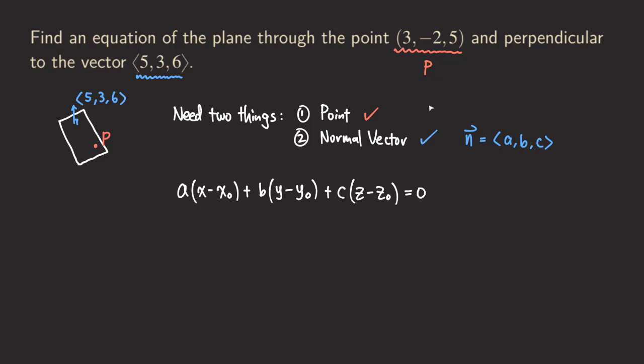And then the point, what about the point? The point is actually the point P. We can just write the general form first: x₀, y₀, z₀. So now we just fill in the rest of the information.